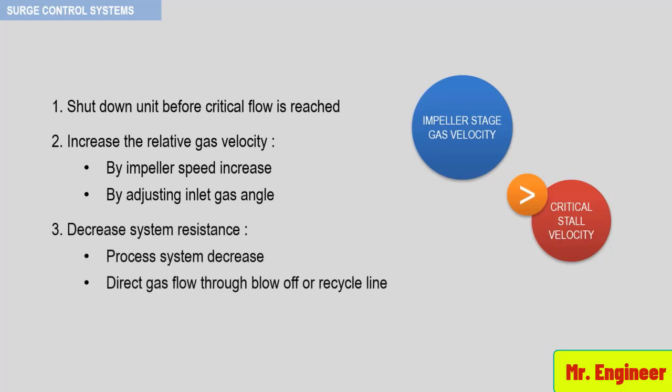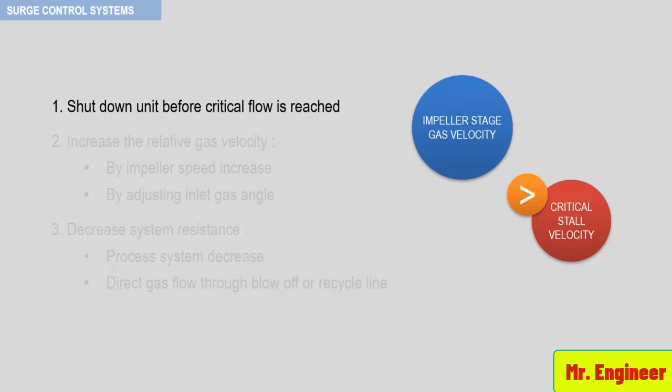The first option is to shut down the unit before critical flow is reached. When you consider that most dynamic compressors are in critical service, so unspaired, then this option is not possible.